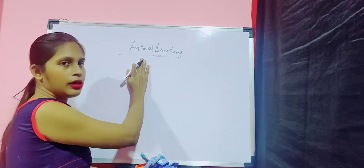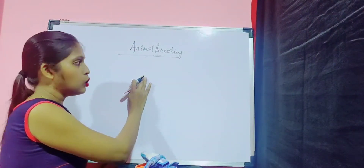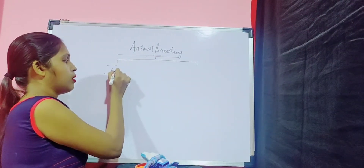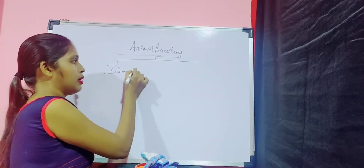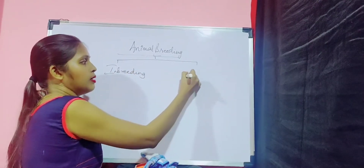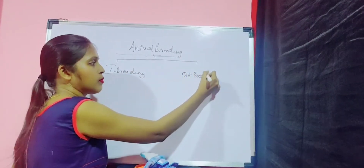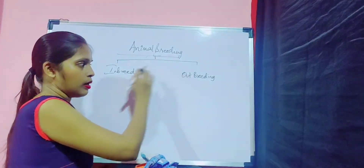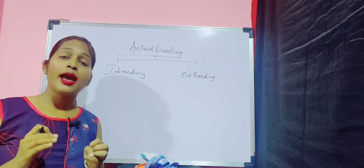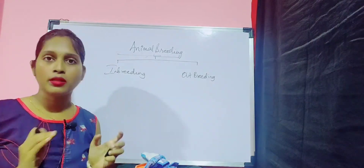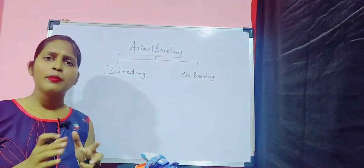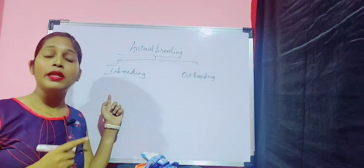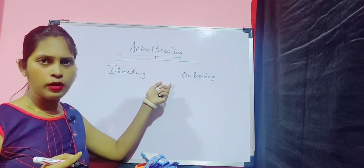Animal breeding is divided into two types: inbreeding and outbreeding. If breeding happens within a breed, we term it inbreeding; if breeding happens outside the breed, we call it outbreeding.